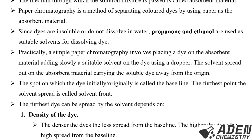Practically, a simple paper chromatography involves placing a dye on absorbent material, then slowly adding a suitable solvent such as propanone or ethanol on the dye using a dropper. The solvent then spreads out on the absorbent material, carrying the soluble dye away from the origin or the baseline.